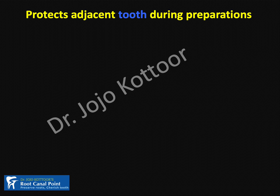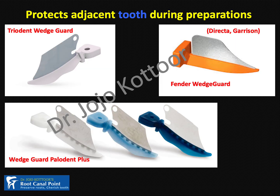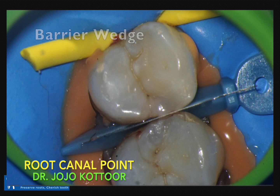The third application of the wedge is to protect the adjacent tooth from injury while doing class 2 cavity preparation. This is primarily achieved by Fender wedges or wedge guards. Fender wedges are produced by Garrison, and wedge guards are produced by Trident or Paladin. Here is a clinical example: I am doing a cavity towards the distal aspect of the first premolar and don't want to injure the mesial side of the second premolar, so a Fender wedge is placed between them before initiating cavity preparation.